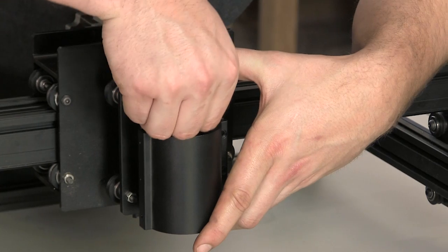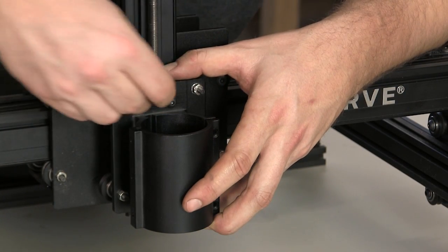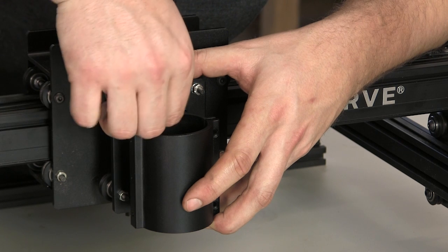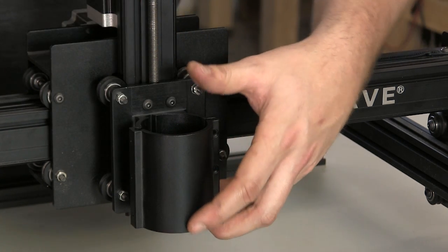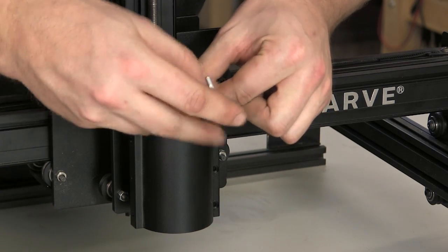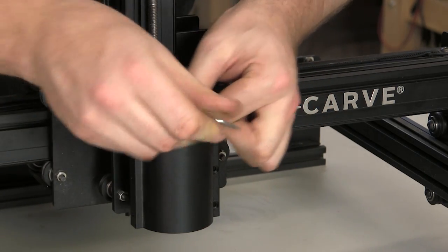Align the two holes in the spindle mount with the Delrin nut and thread two screws into it. Start by getting these screws finger-tight as it's easy to cross-thread the Delrin. Tighten the screws down with a wrench.